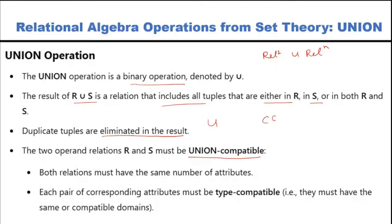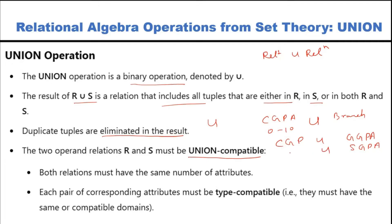Union cannot be applied between, say, CGPA and branch — there is no compatibility. CGPA is a numeric number between 0 to 10, and branch is some alphanumeric characters, so you cannot apply union between them because they are not compatible. But you can take a union of CGPA with SGPA or GGPA, because all these are in the range 0 to 10 and belong to the same group. This same rule applies to intersection and set difference as well.